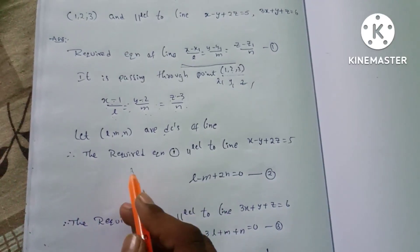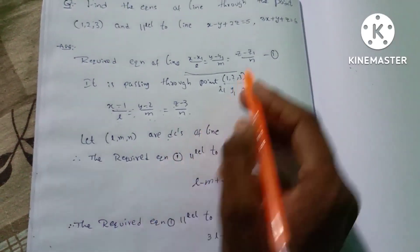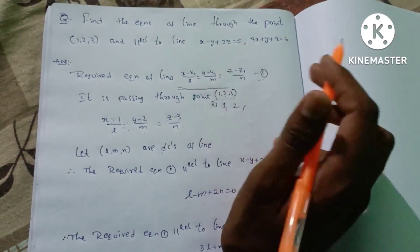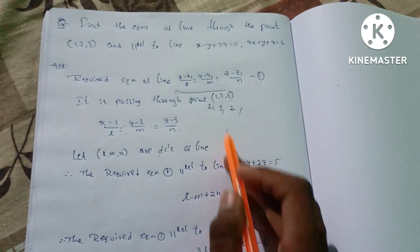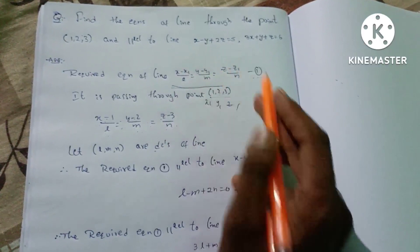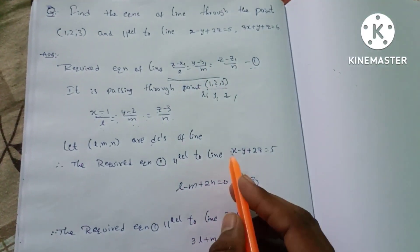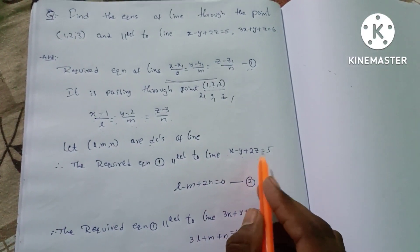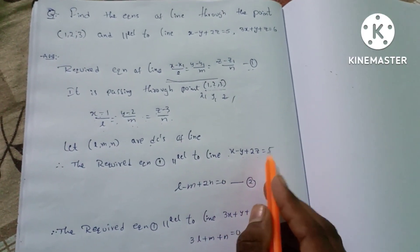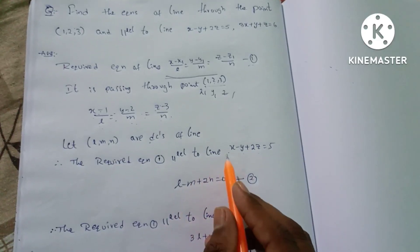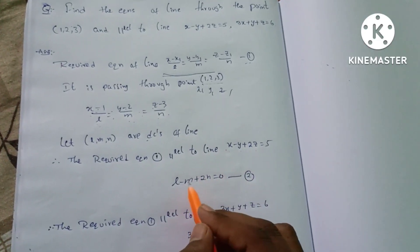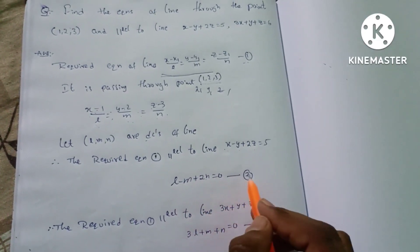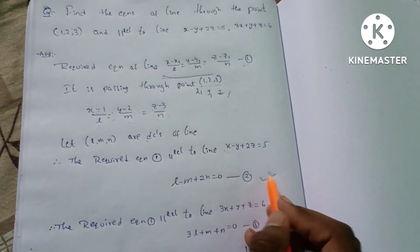Therefore, this is the required equation 1. Equation 1 is parallel to the given line. From the first parallel line condition, we get: L - M + 2N = 0. This is equation 2.